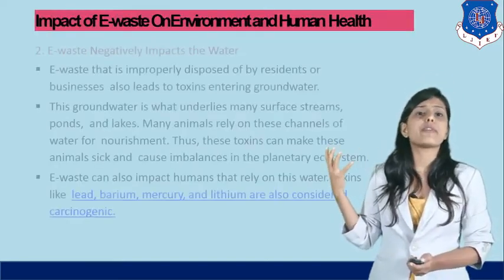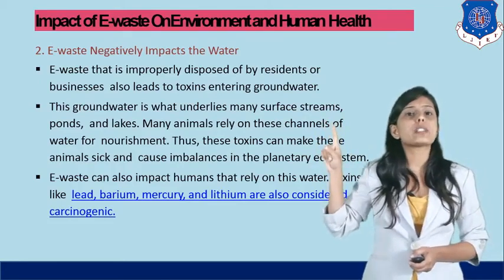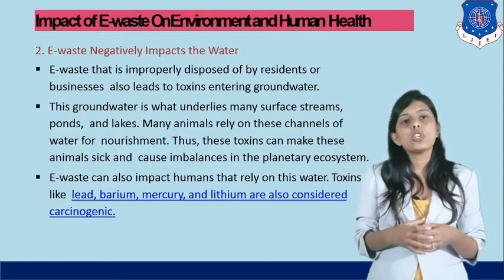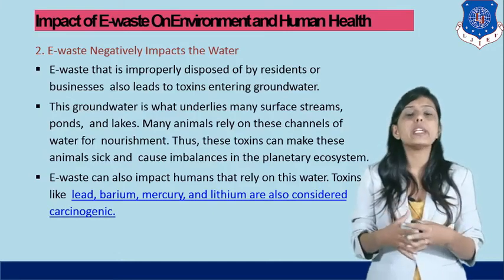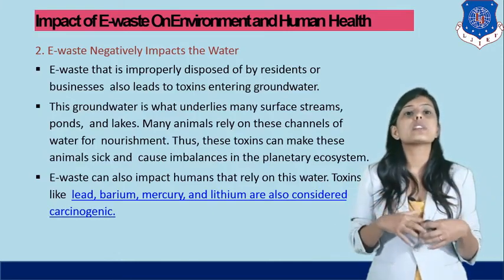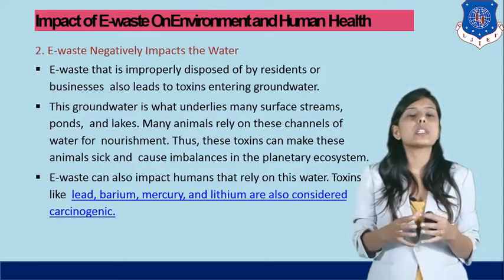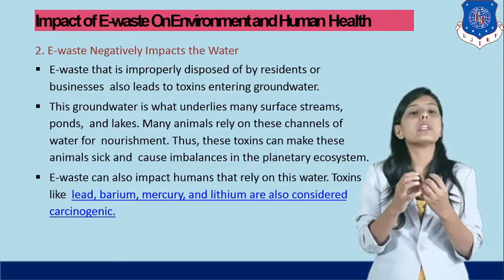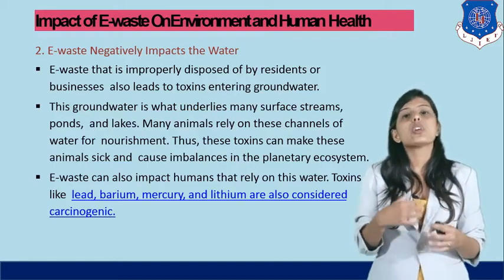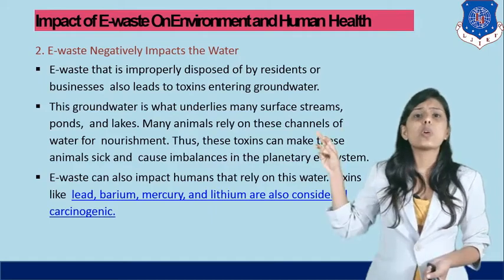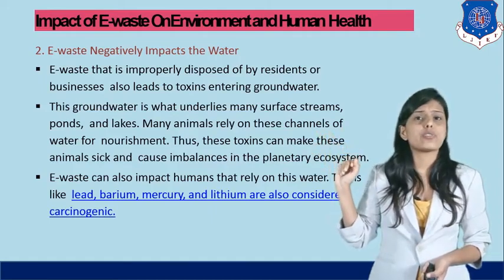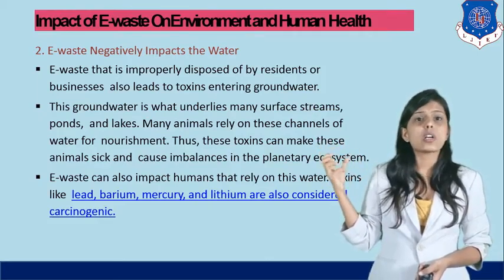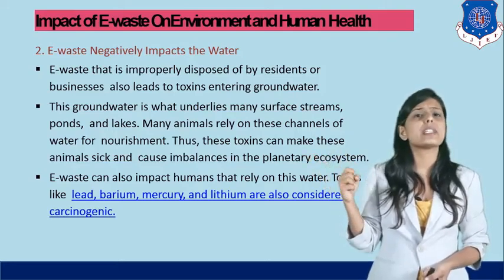E-waste also affects water. E-waste that is improperly disposed by residents or businesses leads to toxins entering groundwater. E-waste disposed improperly on land mixes with the groundwater, so the toxic elements present in electronic components get mixed with rainwater and ultimately end up inside the groundwater. This groundwater underlies many surface streams, ponds, and lakes. Many animals rely on these channels of water for nourishment, so these toxins can make animals sick and cause an imbalance in the planetary ecosystem.